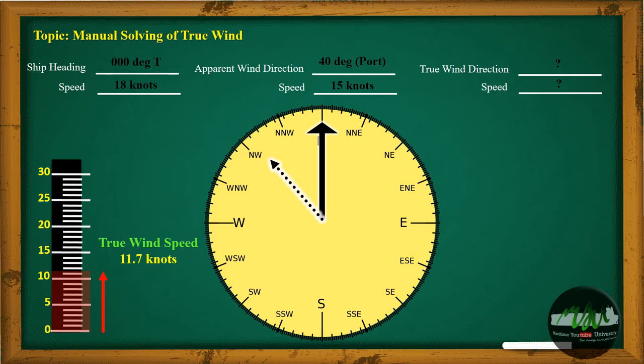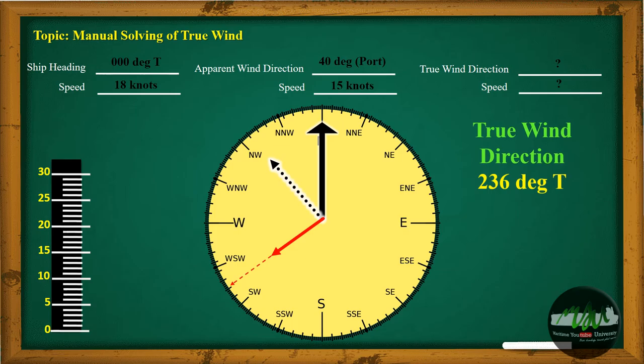After getting the speed, bring the vector to the center in order to get the true wind direction. Therefore, our true wind direction is 236 degrees true.